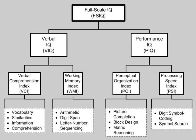The WAIS-3, a subsequent revision of the WAIS and the WAIS-R, was released in 1997. It provided scores for verbal IQ, performance IQ, and full-scale IQ, along with four secondary indices: verbal comprehension, working memory, perceptual organization, and processing speed.